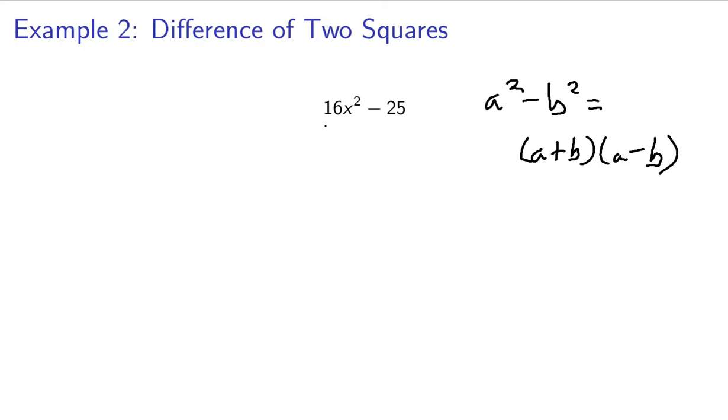Here we have 16x squared minus 25. 16x squared is the same thing as 4x quantity squared, and this 25 is the same thing as 5 squared.